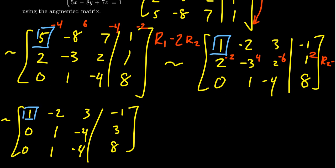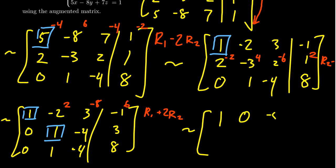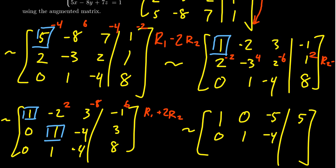Now that the first column is completely row reduced, we move to the second column, where there's already a 1 in the pivot position — so no interchanging or scaling needed. We start row replacing to get zeros above and below. To get a 0 instead of that negative 2 in row 1, we take row 1 plus 2 times row 2, giving us 2, negative 8, and positive 6 to add. For the third row, we replace row 3 with row 3 minus row 2.